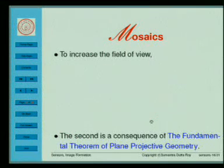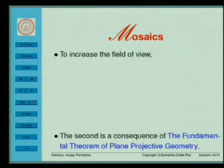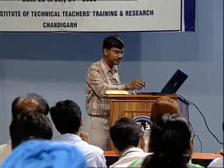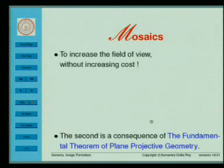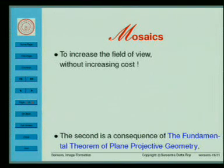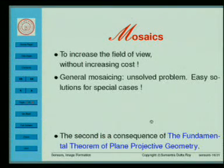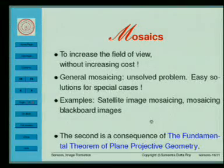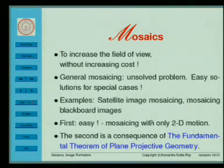Mosaics — this is the second problem we will look at. In mosaics the idea is: I take my camera here, here, here, take a couple of images and stitch them together. The idea in mosaics is to increase the field of view without increasing the cost. General mosaicing is an unsolved problem. Why? Easy solutions exist only for special cases like satellite image mosaicing — Google Earth images are basically taken at different points in time from a satellite or high flying aircraft.